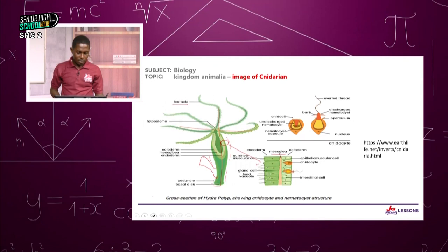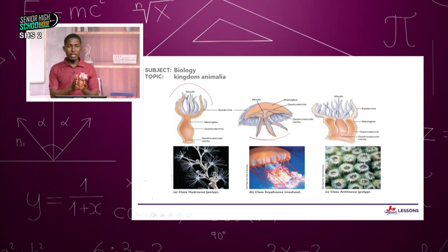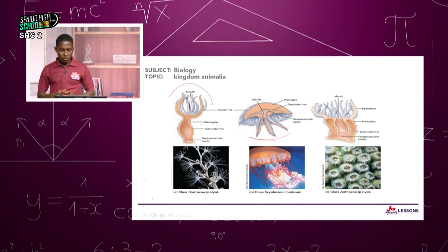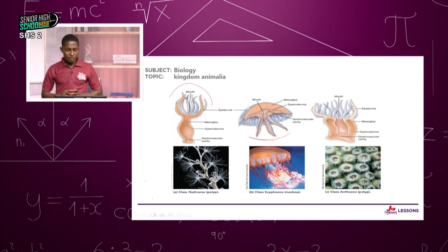On your screen are pictures of class Hydrozoa, where the hydra belongs, and they are solely polyps. Then Scyphozoa, where the medusa structure belongs. And we have Anthozoa, which look like flowers. These are the three classes of Cnidaria you need to know.